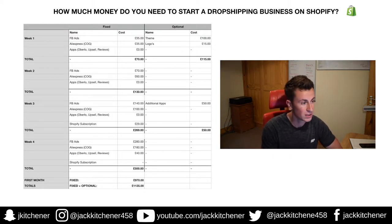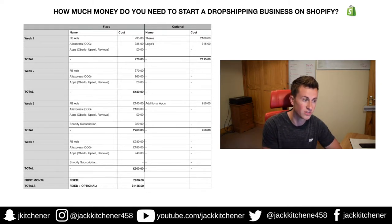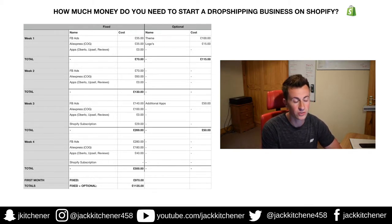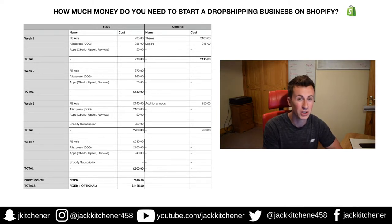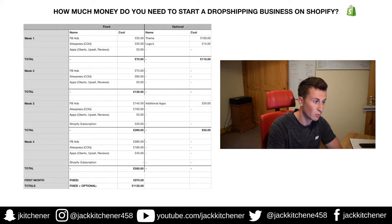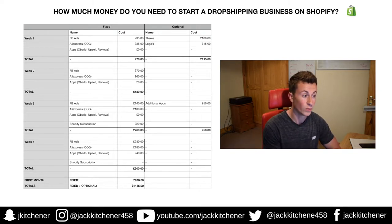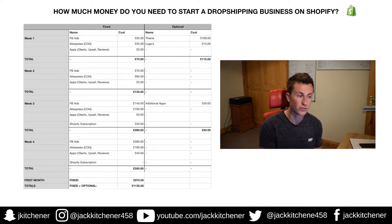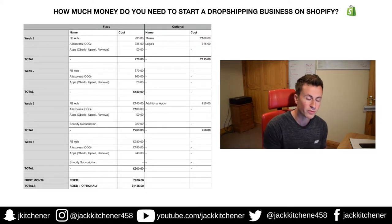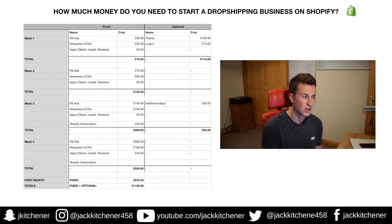I've broken it down week by week with two main columns: a fixed column for costs you can't avoid, and an optional column for optional extras — things you don't have to pay for, but can if you have the extra money. Starting with week one, number one is Facebook ads — without advertising we're not going to drive any traffic or make any money.